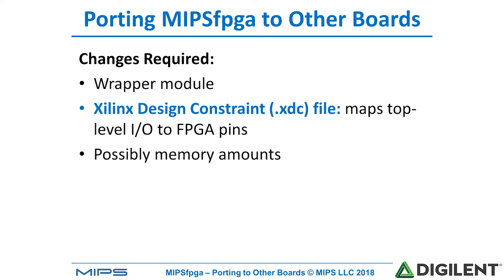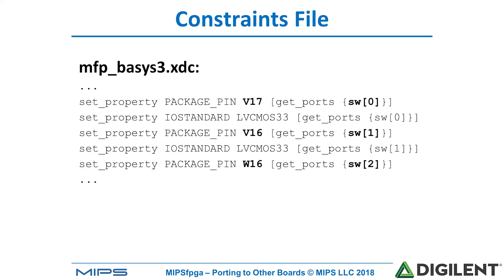The next step is to change the Xilinx design constraints file. This is provided by Xilinx and Digilinx and basically maps our pins to their location on the board. For example, pin V17 of the FPGA is routed on the board to switch zero.